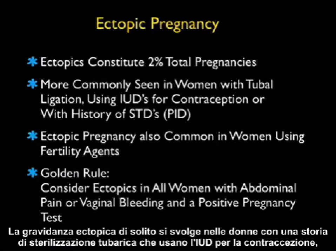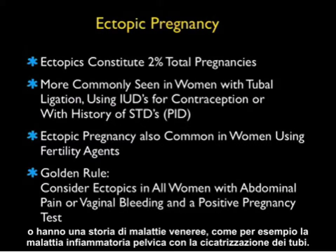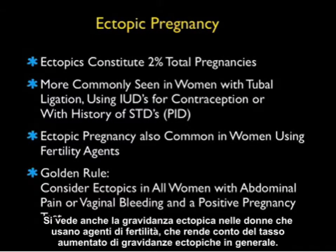Ectopic pregnancy is more commonly seen in women with a history of tubal ligation, who are using intrauterine devices for contraception, or have a history of sexually transmitted diseases such as pelvic inflammatory disease with scarring of the tubes. Ectopic pregnancy is also commonly seen in women using fertility agents, which accounts for the increasing rate of ectopic pregnancy overall.